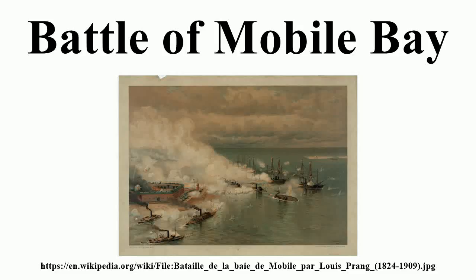The Battle of Mobile Bay of August 5, 1864, was an engagement of the American Civil War in which a Federal fleet commanded by Rear Admiral David G. Farragut, assisted by a contingent of soldiers, attacked a smaller Confederate fleet led by Admiral Franklin Buchanan and three forts that guarded the entrance to Mobile Bay. The battle was marked by Farragut's seemingly rash but successful run through a minefield that had just claimed one of his ironclad monitors, enabling his fleet to get beyond the range of the shore-based guns.